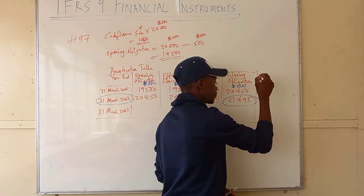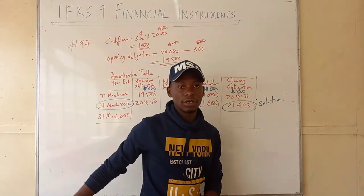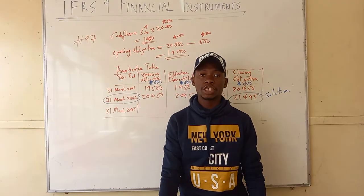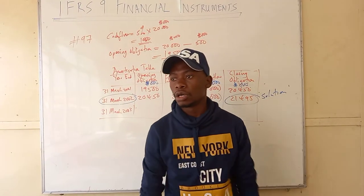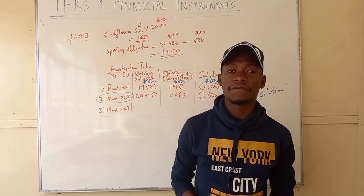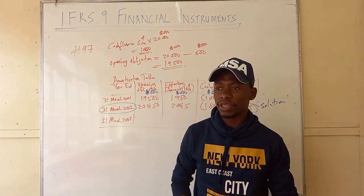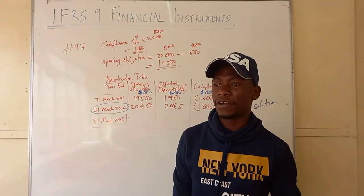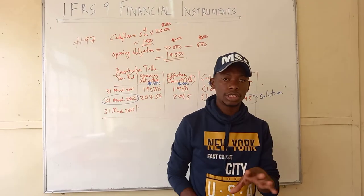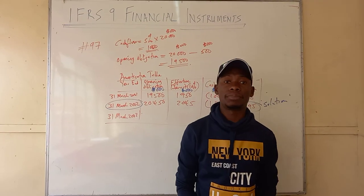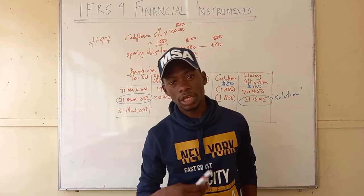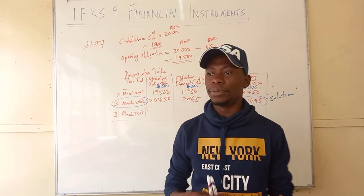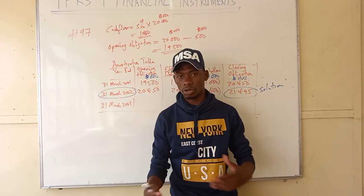That's it. Also on financial instruments, you need to know about the classification of financial instruments — whether they are classified at amortized cost, fair value through other comprehensive income, or fair value through profit or loss. The business model approach is something you look at when doing strategic business reporting, but in financial reporting you just need to know the business model.